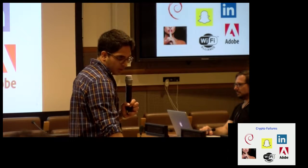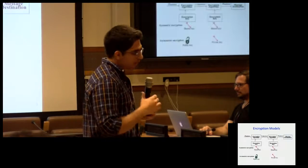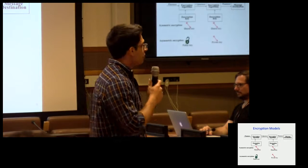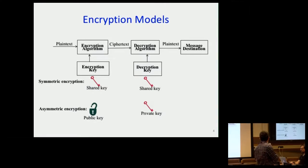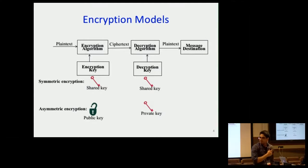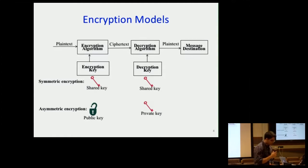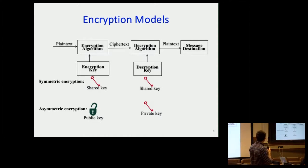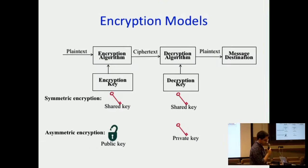Before me, there was a talk on cryptography in general, and John gave a very good introduction to the whole of crypto. So I'm not going to go into classic crypto anymore — I'm just going to talk about modern crypto. In modern crypto, we have two forms: symmetric encryption and asymmetric encryption.